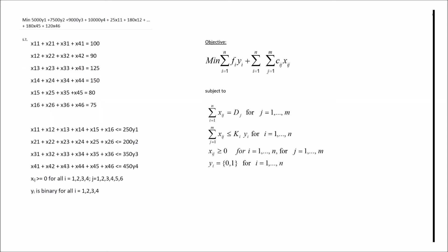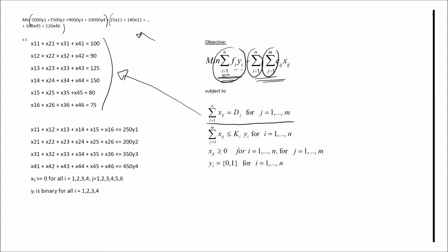The last thing I want to show is the general form and how we can derive it from this model. The objective function has a fixed cost component and a cost-due-to-walking component. The fixed cost part multiplies fi by yi and is summed over i, written as the sum over i of fi times yi. The walking cost part multiplies Cij by xij; since we have two indices and sum over all i-j pairs, we have a double summation over i and j of Cij times xij.